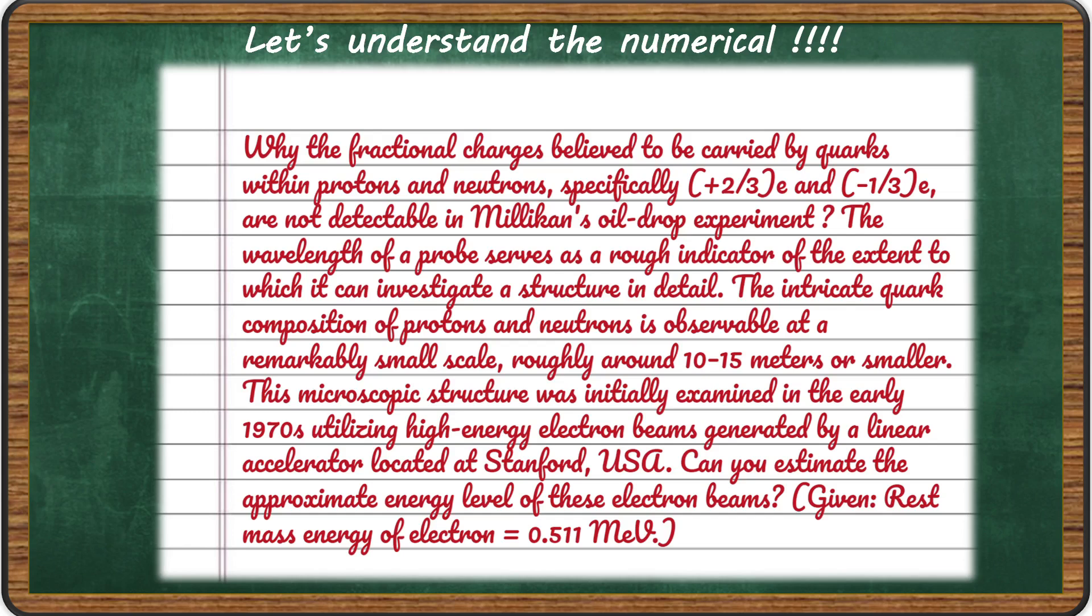The intricate quark composition of protons and neutrons is observable at a remarkably small scale, roughly around 10 to the power minus 15 meters or smaller. This microscopic structure was initially examined in the early 1970s utilizing high energy electron beams generated by a linear accelerator located at Stanford, USA.